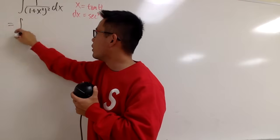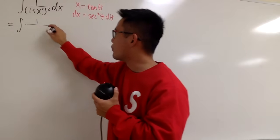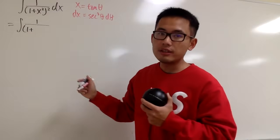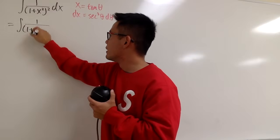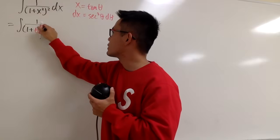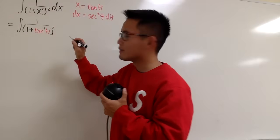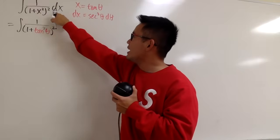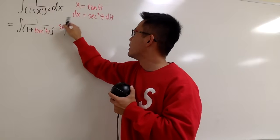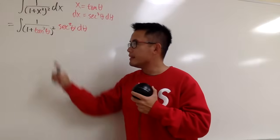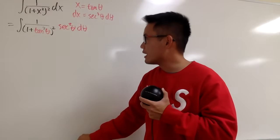We have the integral on the top. We still have 1 over, this is parentheses, 1 plus. The x is the tangent theta now, so we have tangent squared theta and then we still have the second power right here. Next, the dx is the secant squared theta d theta.